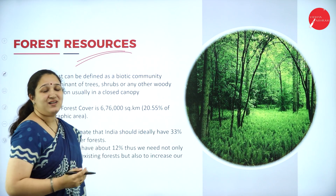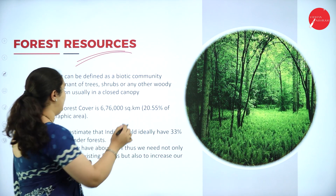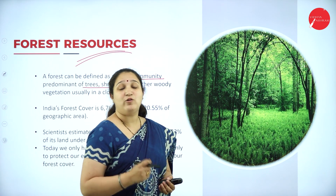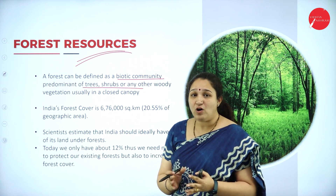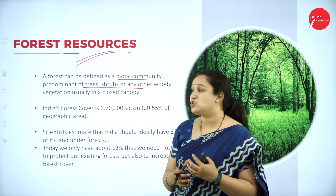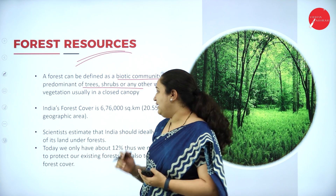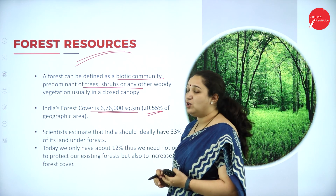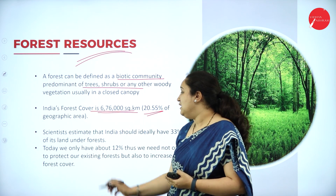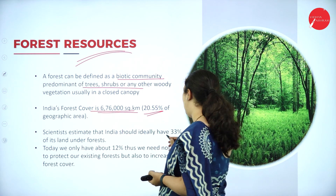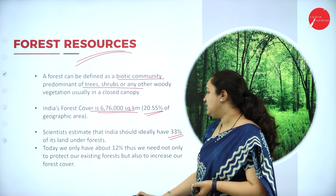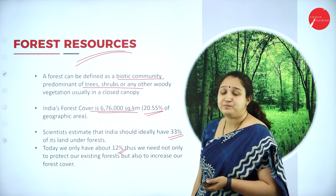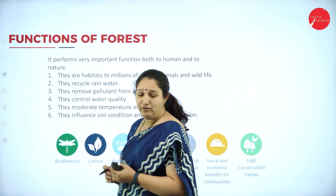Next we have forest resources. A forest is a biotic community which is predominated with trees, shrubs, plants, woody vegetation, and also has wild animals. India's forest cover is 676,000 square kilometers, which is only 20.55% of geographical area. Scientists estimate that for our population we should have at least 33% of our land as forest, but today we have only 12% remaining because of over-exploitation of the forest.